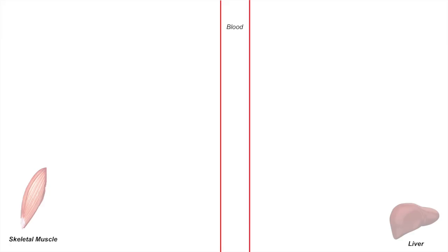So how do all these processes occur in the skeletal muscle and liver? In the skeletal muscle, when branching amino acids are catabolized, the first enzyme in the branching amino acid catabolism pathway is BCAT, or branching amino transferase. In this process, the amino group on a branching amino acid is transferred from the branching amino acid to alpha-ketoglutarate, forming glutamate.